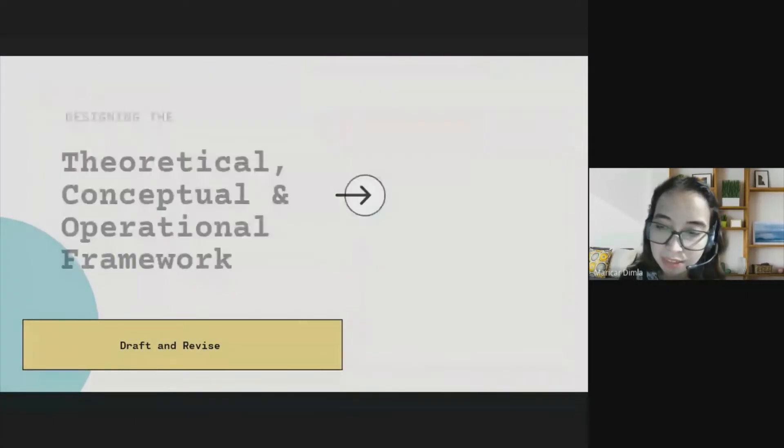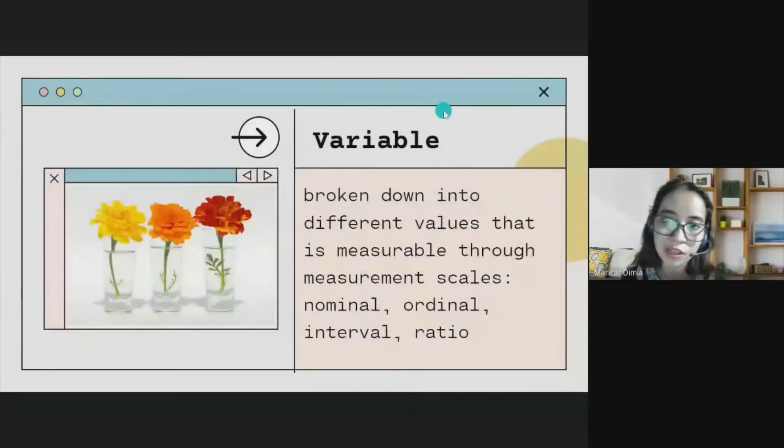So when we say frameworks, conceptual, theoretical or operational, we are actually dealing with variables. Since we are dealing with a quantitative study, our variables must be measurable. It can be in a form of nominal, ordinal, interval, or ratio. I won't approve your proposal if your variables, specifically the sub-variables, are not in a form of measurable scale.